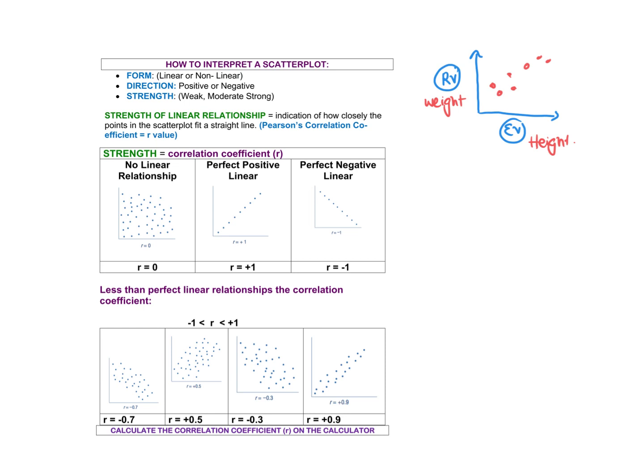So we've got a scatterplot — this is a way of displaying data. Now we need to interpret what the scatterplot tells us. When they say describe the association, for example weight and height, we're going to describe three things. First, we're going to talk about the form.